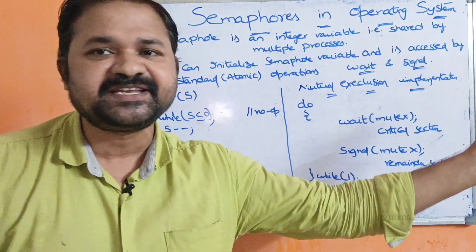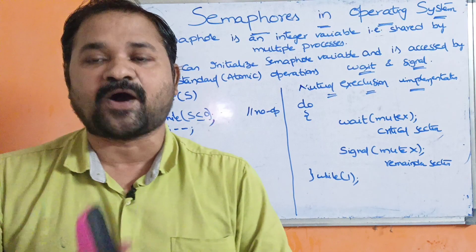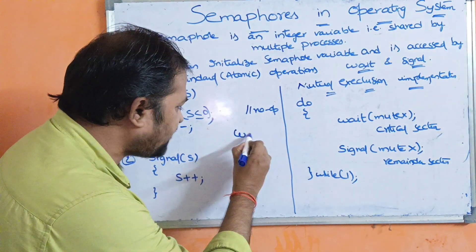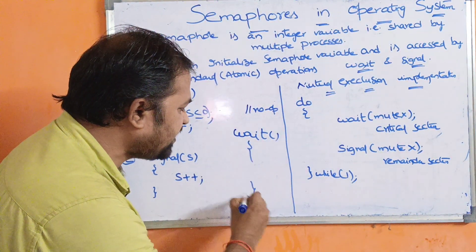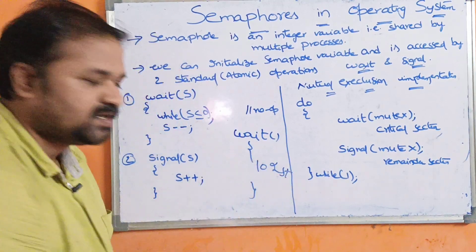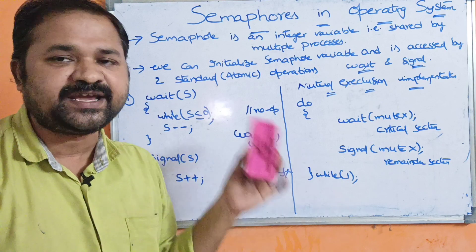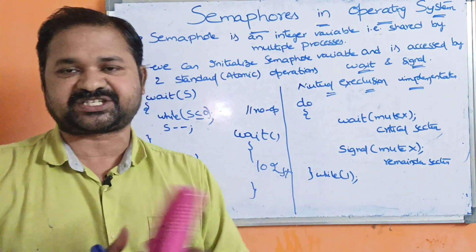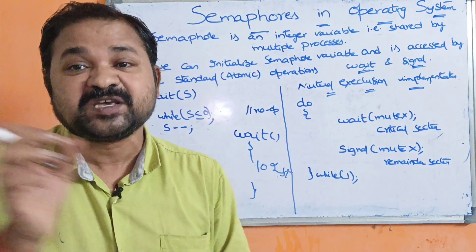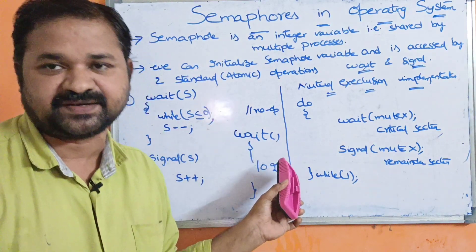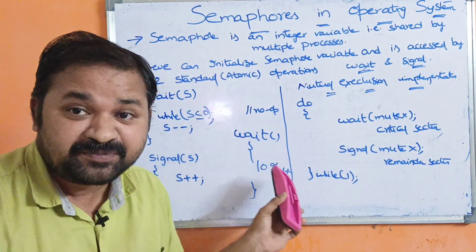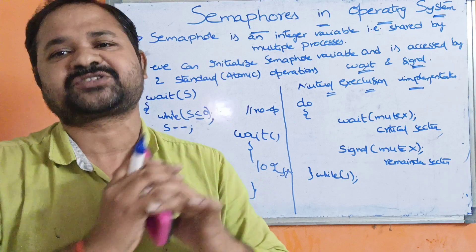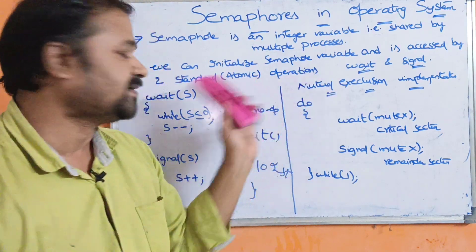Wait and signal operations are called atomic operations. Atomic operation means, for example, if the wait function contains 10 instructions, then when a process is executing the wait operation, we must execute all 10 instructions. In the middle, it is not possible to forcibly stop or interrupt this function. All the instructions in that function should be executed — that is called atomic.